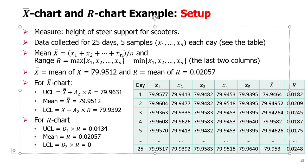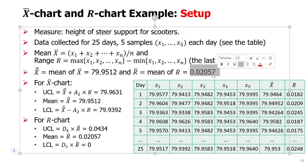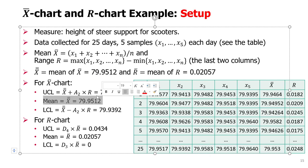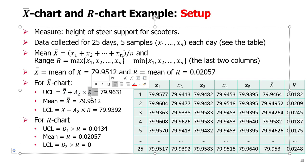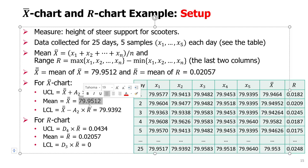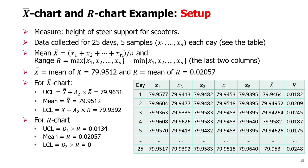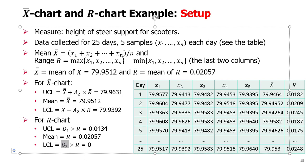We calculate the mean of means — this value is 79.9512 — and the average range, which is 0.02057. For the X-bar chart, we calculate the upper control limit, the mean (x double bar, which is already calculated), and the lower control limit. We calculate them using the A2 parameter multiplied by R-bar, and we get these values — a little bit higher and lower than the mean. For the R-chart, we calculate the upper control limit by taking the average of the ranges and multiplying by the D4 parameter, and by D3 for the lower control limit.